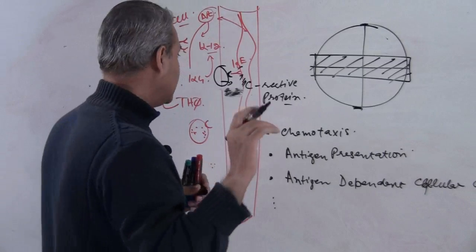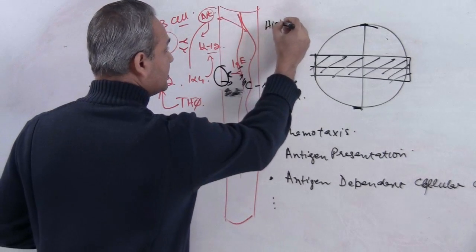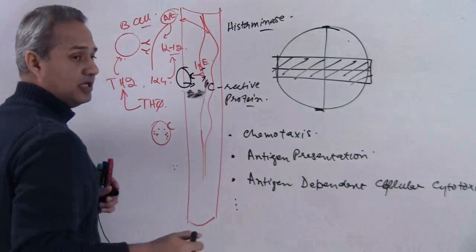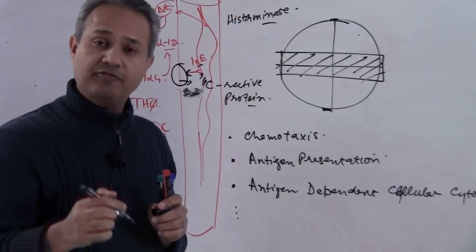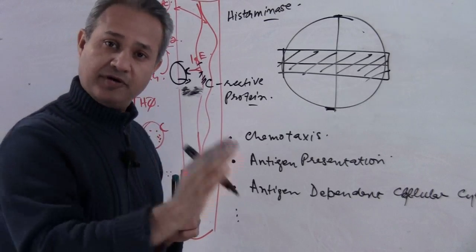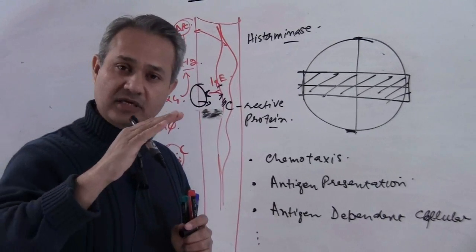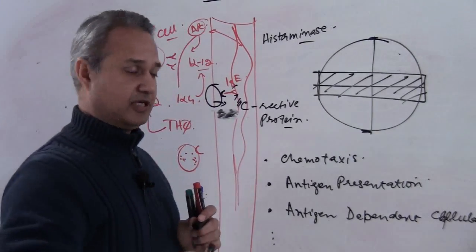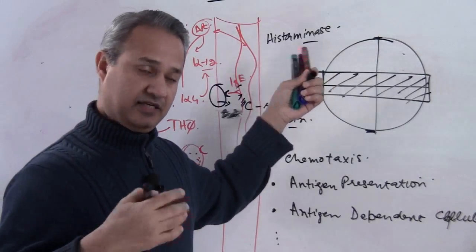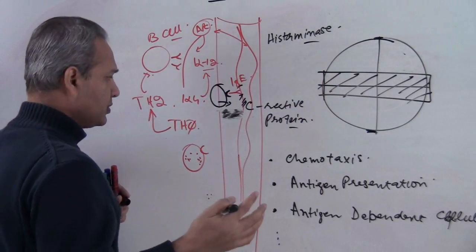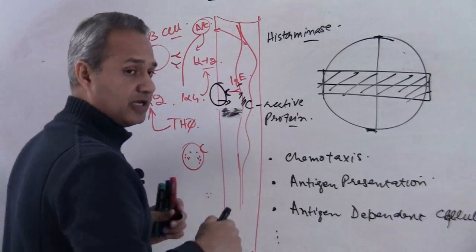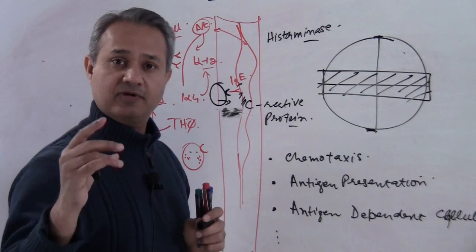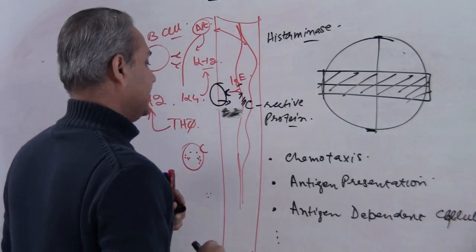The other function of the eosinophil, I hope you remember, is that they contain histaminase. And that histaminase actually reduces the histamine which is given out in the type 1 reactions. So eosinophil to some extent actually control the type 1 allergic reactions by reducing it, by releasing the histaminase. So two primary reactions now, number one taking care of the parasitic infections and number two taking care of the type 1 hypersensitivity reactions.